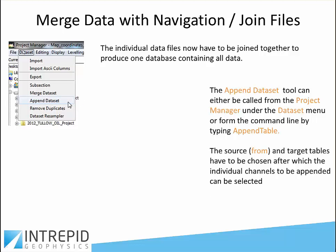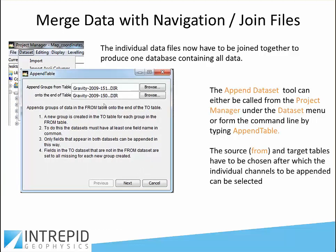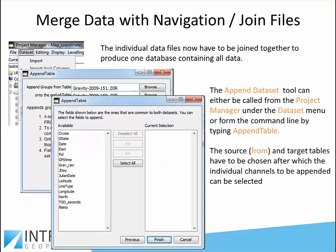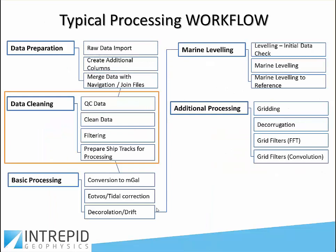In the project manager under Dataset, choose Append. As with the Merge, you simply say you want to put Julian day 151's data on the back of data from day 150. As long as they share the same fields, the job is easily achieved with the click of one button. You select all the fields from day 151 to add to the existing one, hit Finish, and it goes. This brings us to the end of stage one — the data preparation — a lightweight quick look at the sorts of processes and tools involved.